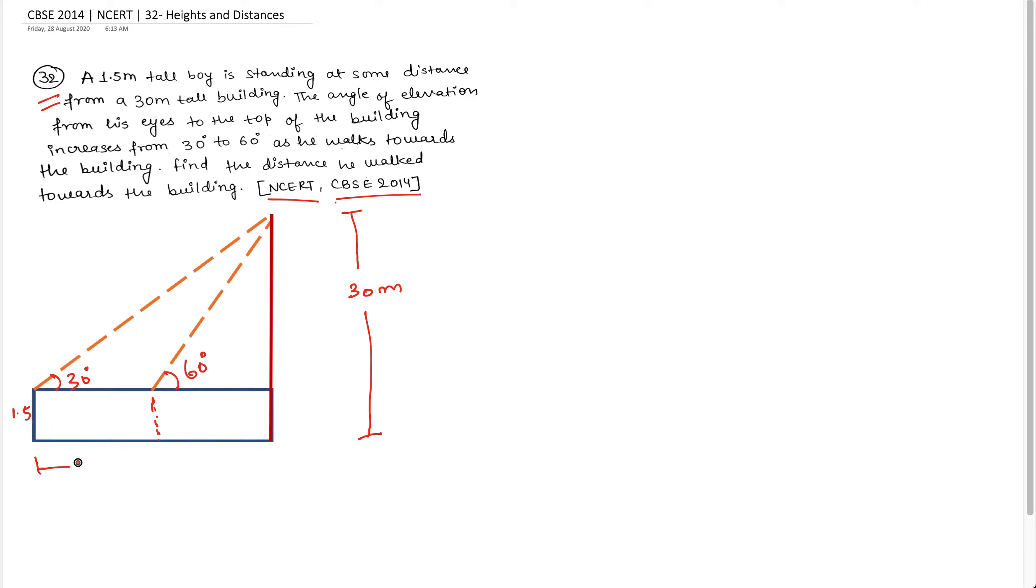Now let's see. The boy has the distance that we have to find out. This is x1. And the other distance that has been saved is x2. If this is x1, this distance is x1 because it is a rectangle. And if this is x2, this distance is x2 because it is a rectangle. And if this is 1.5 meters, this is also 1.5 meters. And this is 30 minus 1.5 meters. This is 28.5 meters.